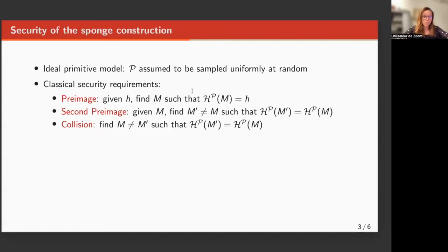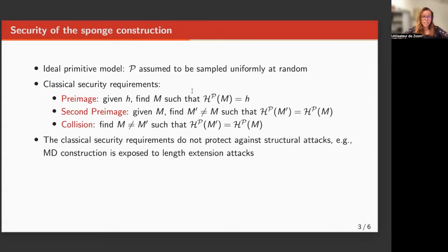Mainly pre-image, second pre-image, and collision resistance. Unfortunately, these security requirements are not strong enough for some applications. Consider, for example, the Merkle-Damgard construction based on an ideal compression function. Even if it is pre-image, second pre-image, and collision resistant, it is exposed to length extension attacks, which can be a problem in some concrete schemes.